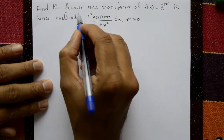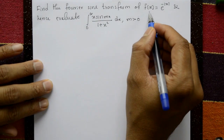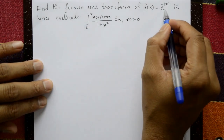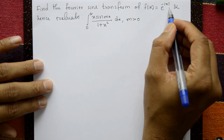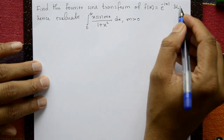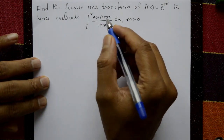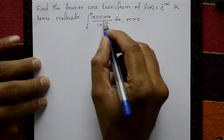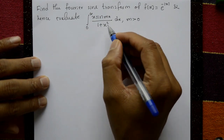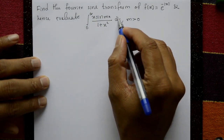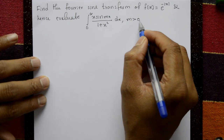Find the Fourier sine transform of f(x) = e^(-|x|), and hence evaluate the integral from 0 to infinity of x·sin(mx) / (1 + x²) dx, where m is greater than 0.